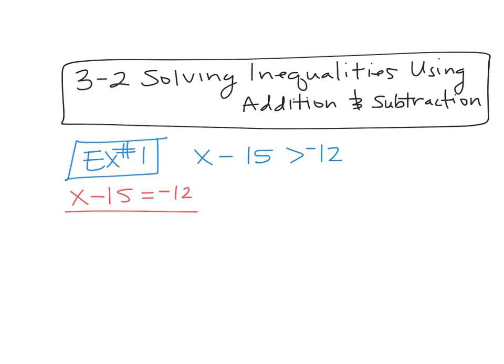So if I were to solve this equation, what would I do first? Add 15. So when you go over to this inequality and you solve it, what should you do first? Add 15. So treat it exactly like you treat your equation. So if I add 15 here and I add 15 here, then what I'm left with, this goes away. I have x. What's my symbol? It's greater than. X is greater than. And what's negative 12 plus 15? 3. So you get x is greater than 3.